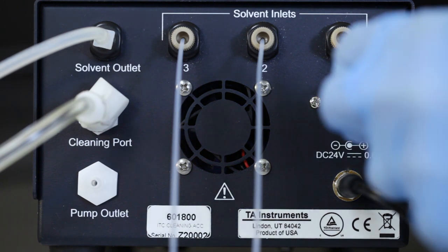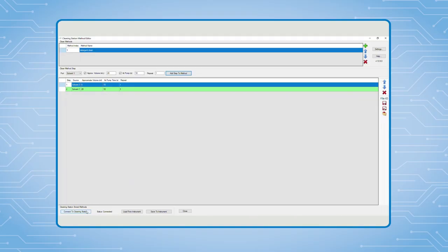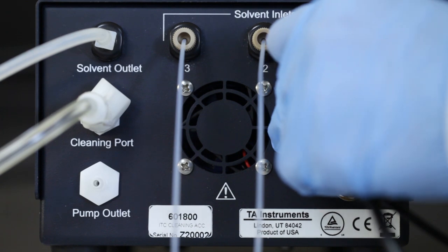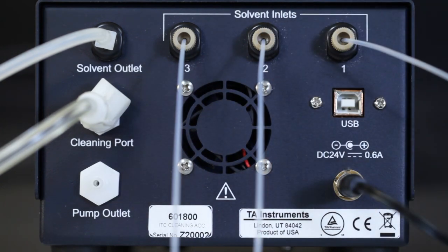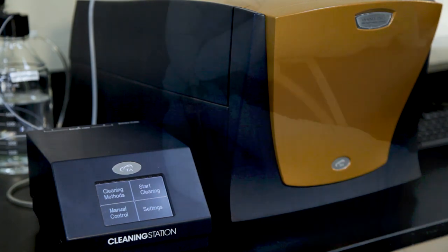After the cleaning method or methods are written, they are transferred to the device via a USB cable. After attaching the cable, the cleaning station can be detected by the software. The files are saved and ready for transfer. To transfer the files, the user will select Save to Instrument. After the update, an audible beep will sound and the USB cable can be detached and the cleaning station can be moved around the lab for use on multiple instruments.